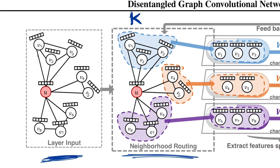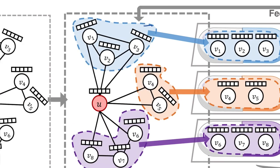For example, in a general social network K should be quite large because there are many aspects. But in a company-wide social network, far fewer things are interesting since nobody posts about pets or cars in their company profile. You define K — the number of concepts such as machine learning interest or cars interest — and the algorithm automatically finds what those concepts are and which part of each node's neighborhood is representative for each one. This could be concept one, concept two, concept three.